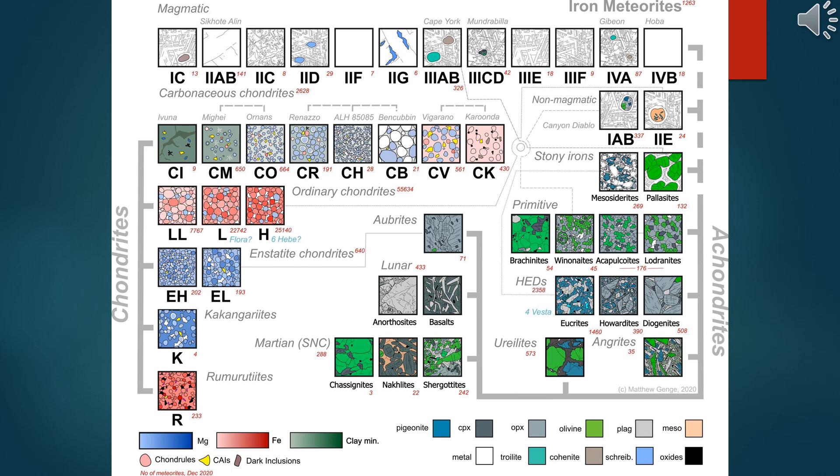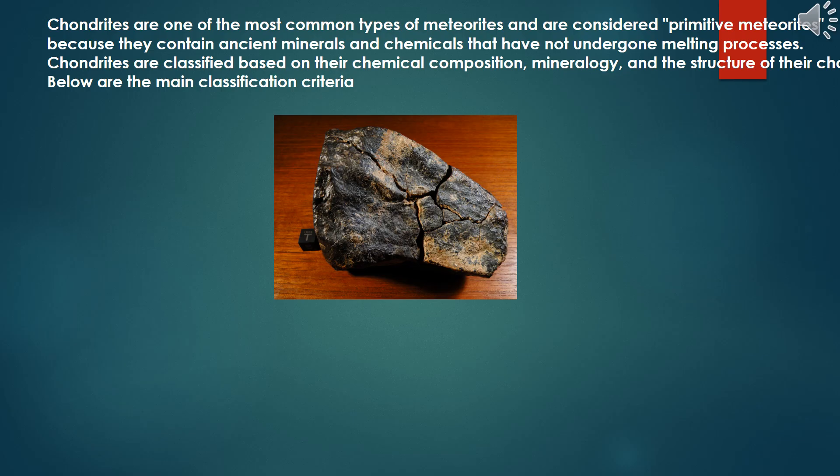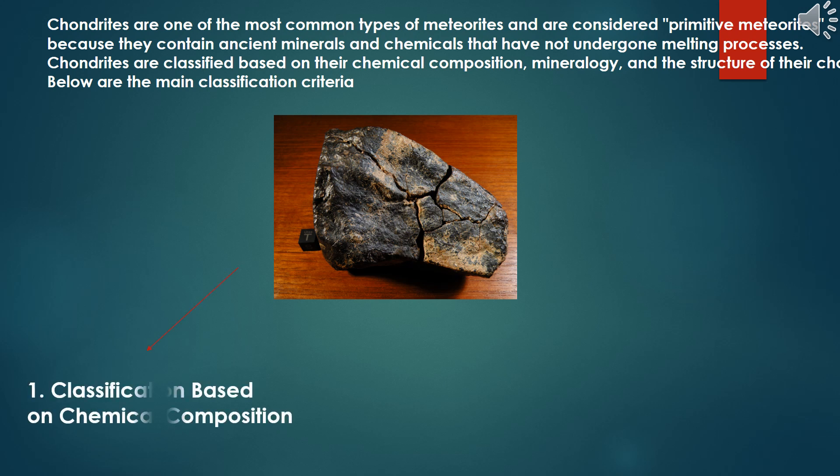Meteorite classification is a complex process requiring high expertise and modern laboratory equipment. Scientists often use multiple techniques to confirm classification results. Chondrites are one of the most common types of meteorites and are considered primitive meteorites because they contain ancient minerals and chemicals that have not undergone melting processes. Chondrites are classified based on their chemical composition, mineralogy and the structure of their chondrules.